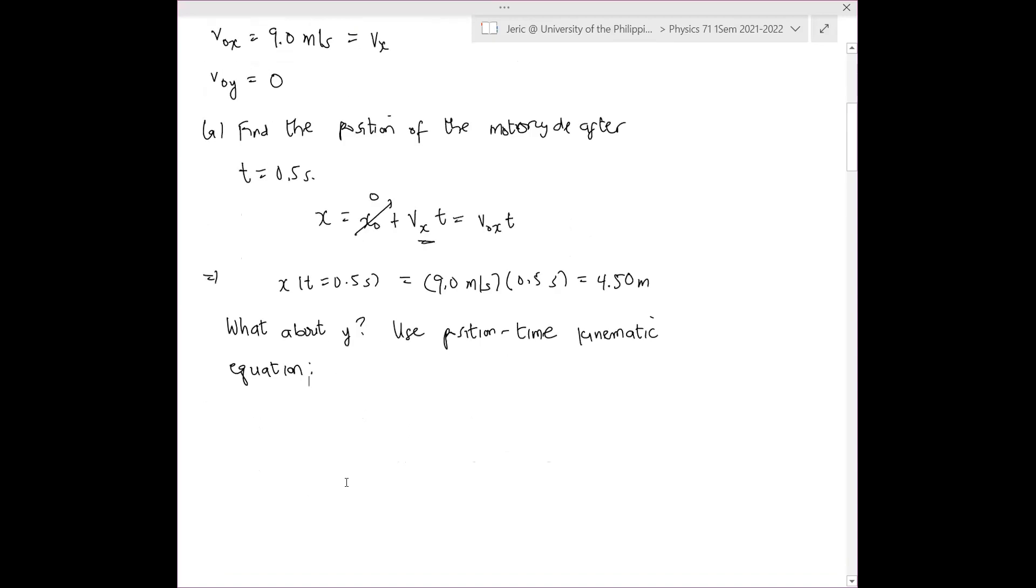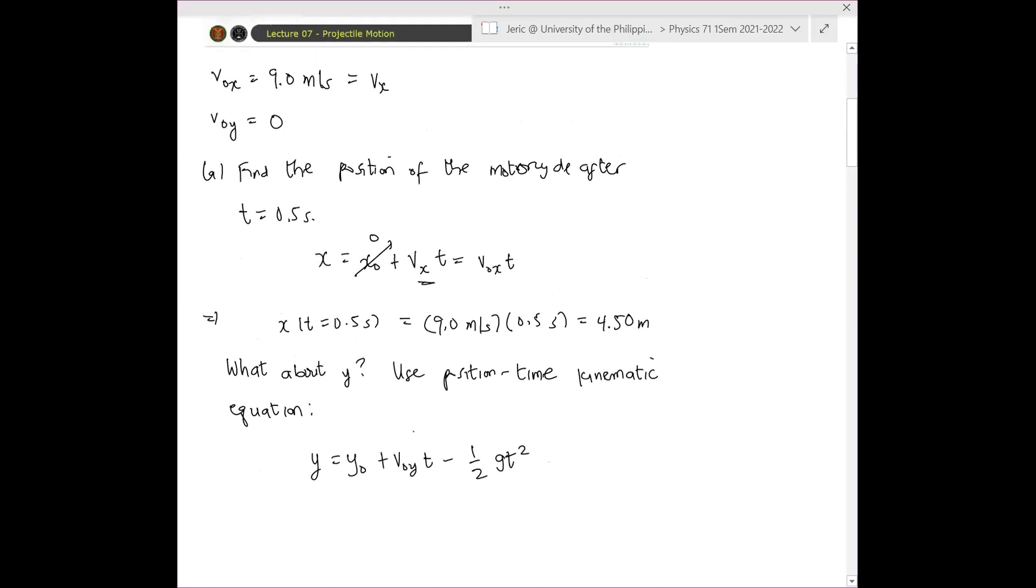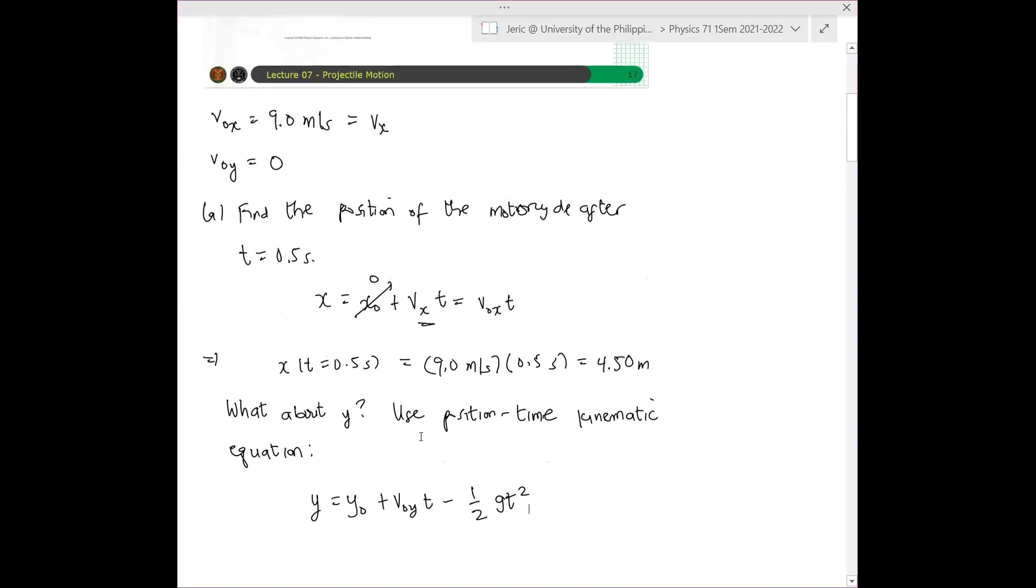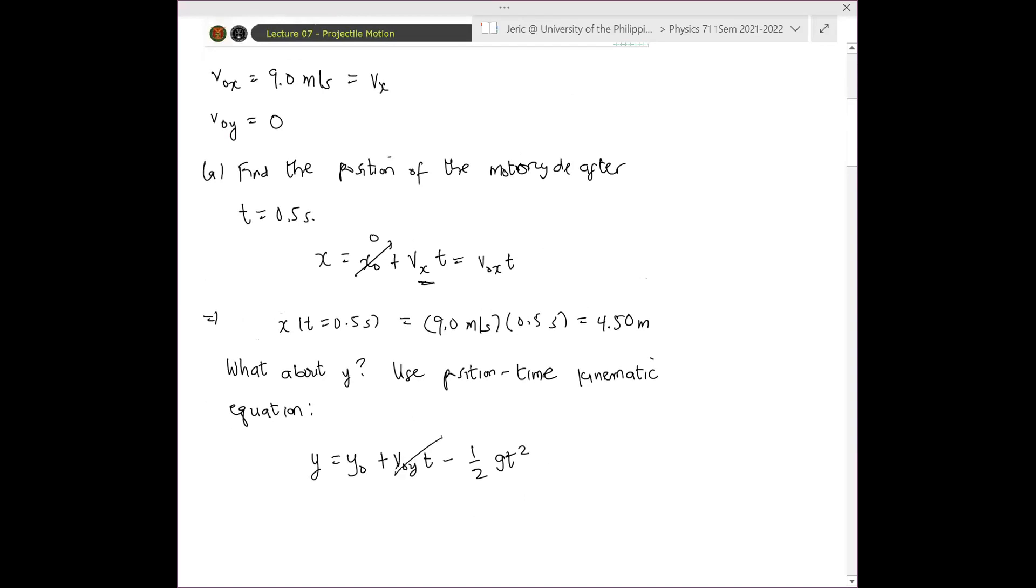So in that case, what's your y? Y is just equal to y naught plus v naught y t minus one-half g t squared. But what is your v naught y? It's given now here. V naught y vanishes. There's no v naught y. There's also no y naught. Therefore, this just means y equals minus one-half g t squared.